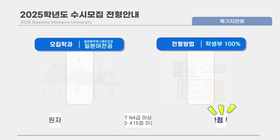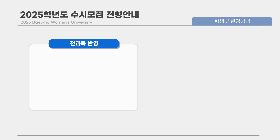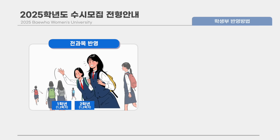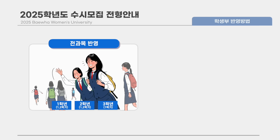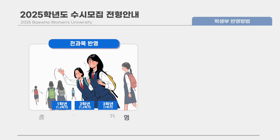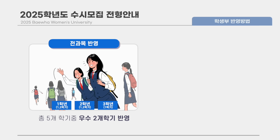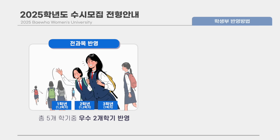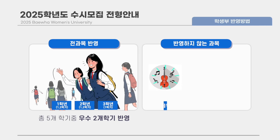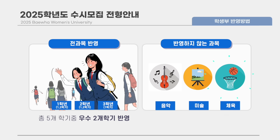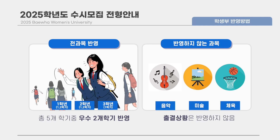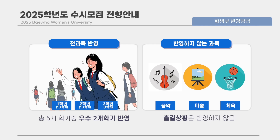학생부 반영방법은 1학년, 2학년, 3학년 1학기까지 총 5개 학기 중 우수 2개 학기를 반영하며, 성적이 있는 전과목을 반영합니다. 단, 음악, 미술, 체육과목과 출결 상황은 반영하지 않습니다.